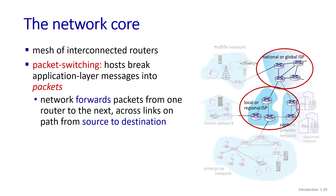The network core is basically a mesh of interconnected routers. Here in this figure, you can see different routers of ISPs which are connected to each other. The major function of the network core is how packets from hosts on the access networks get forwarded through the core of the network towards the user on the other side of the network.